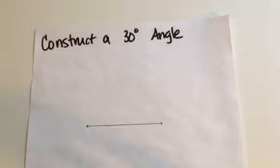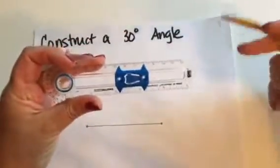Hello. Today I'm going to teach you how to construct a 30-degree angle. We're going to use our compass and its straight edge to do this.